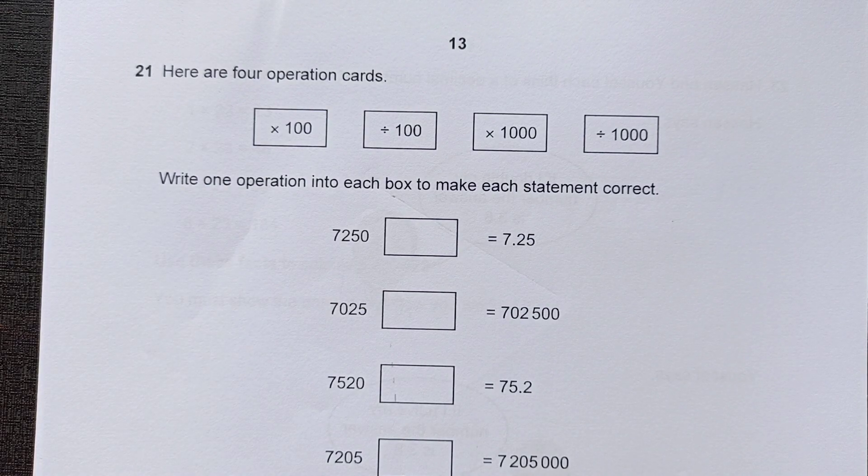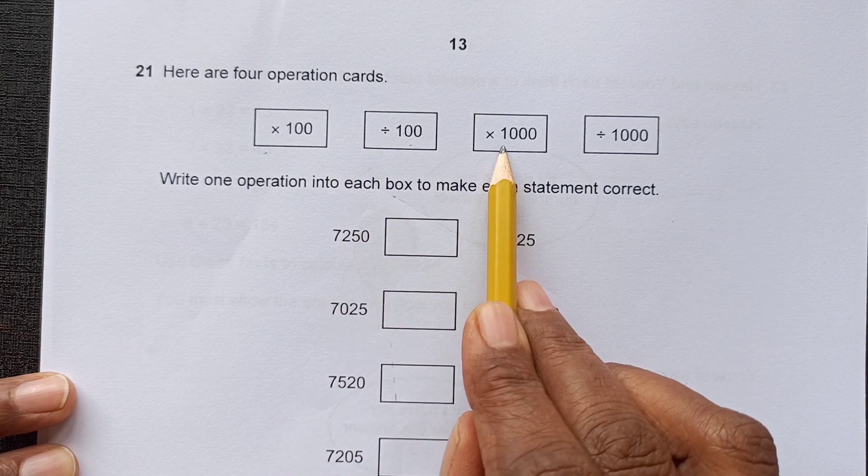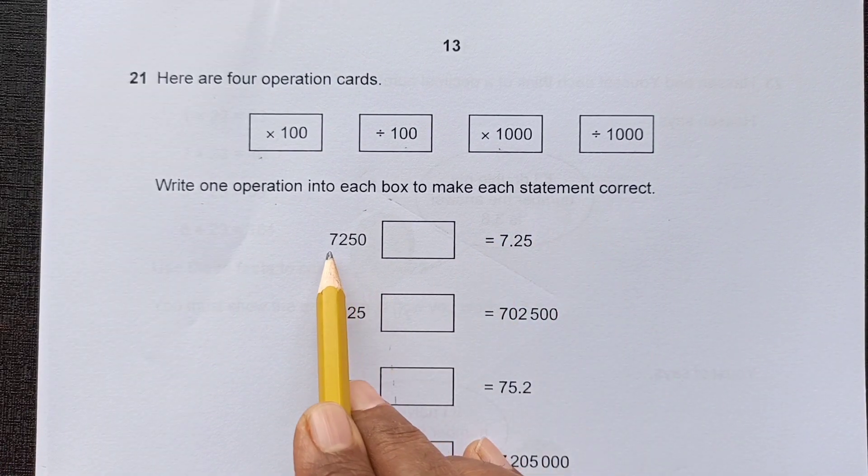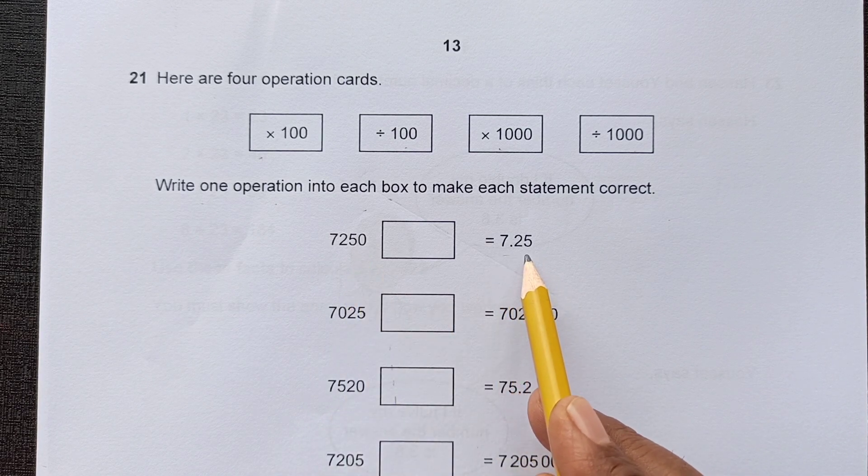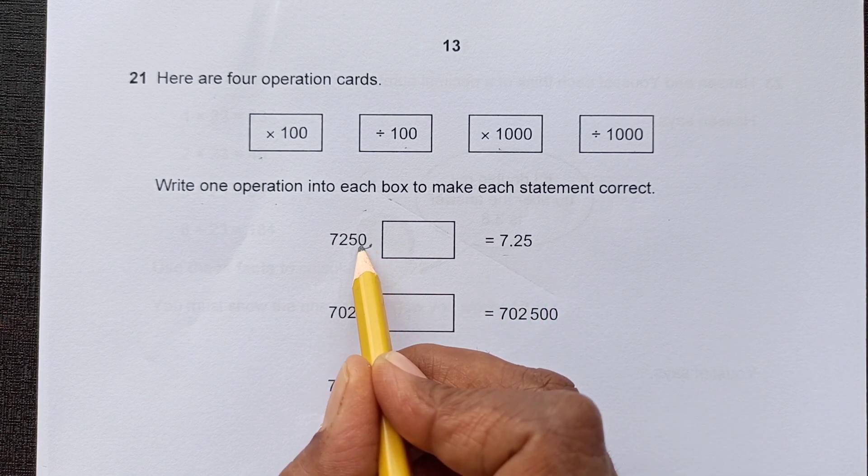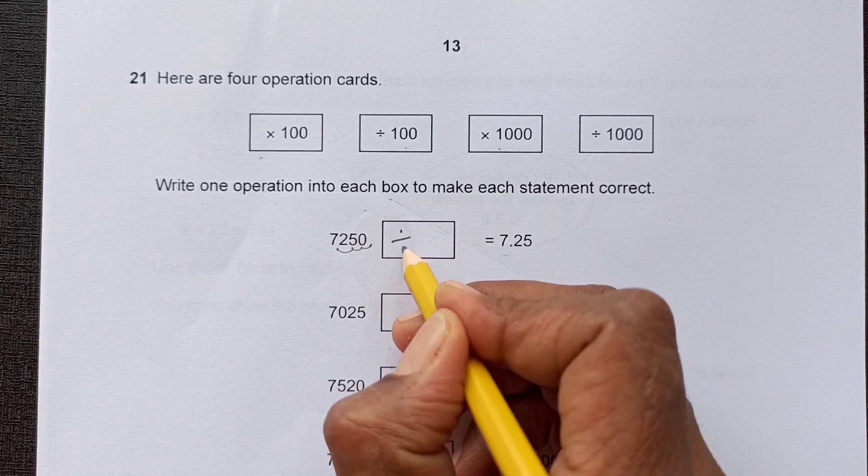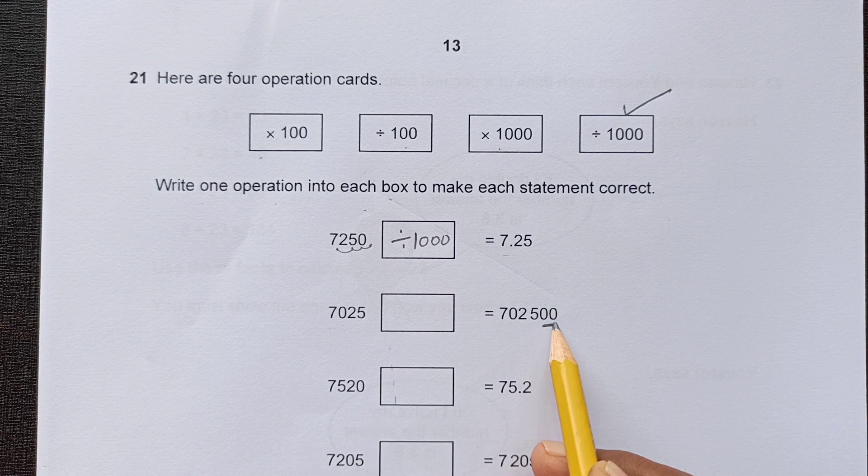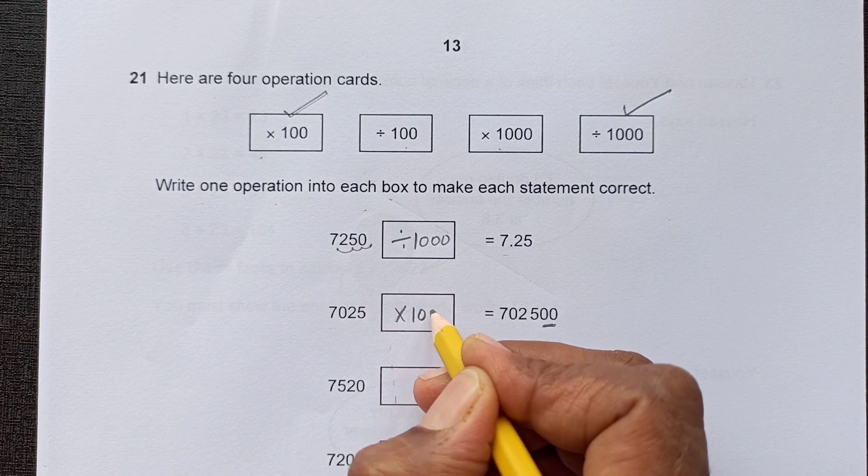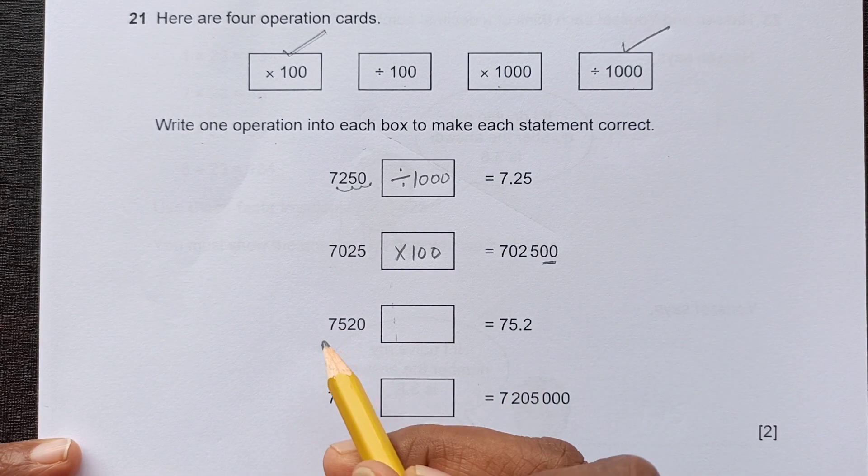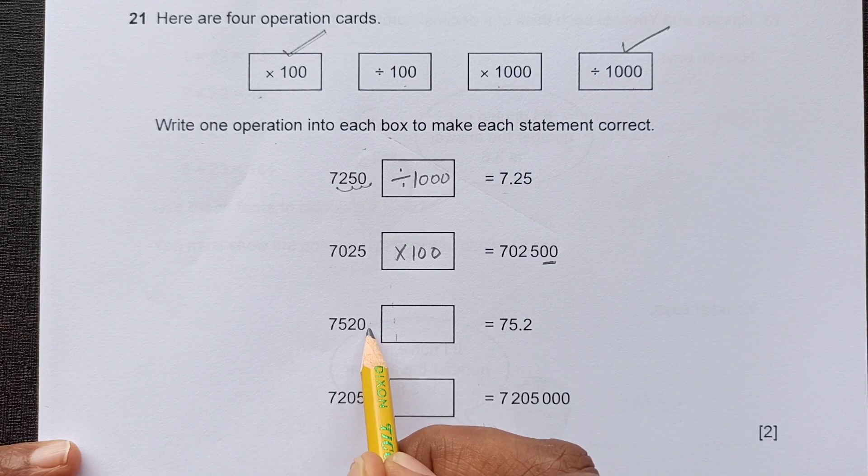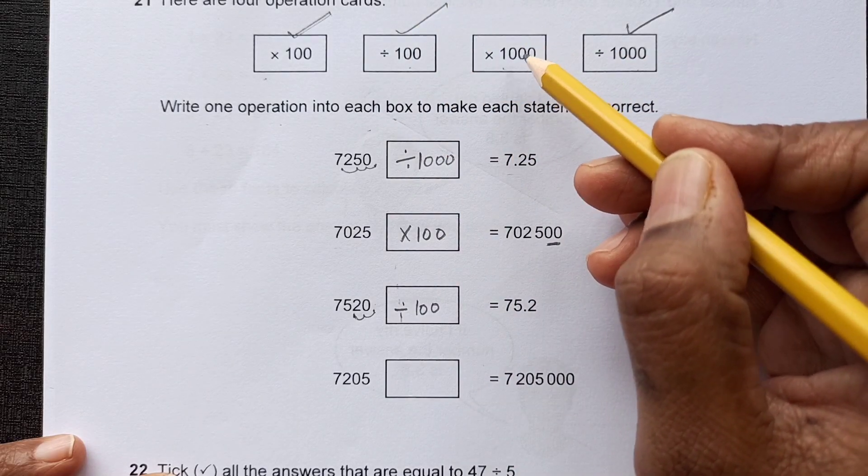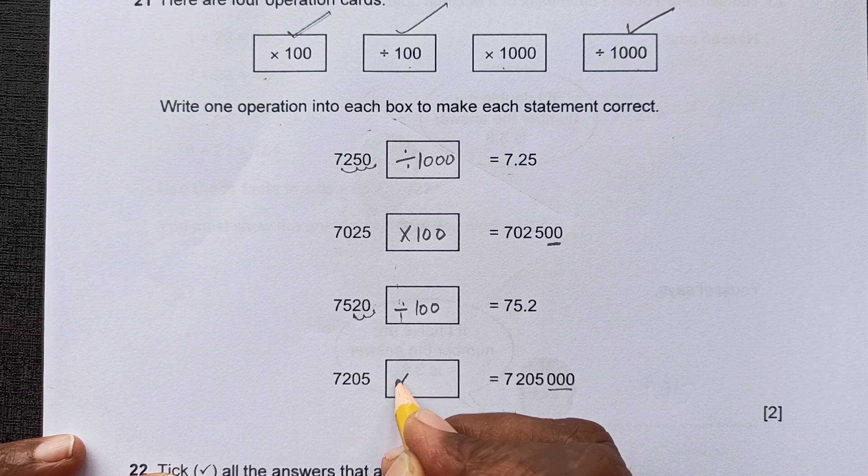Question 21. Here are 4 operation cards: multiply by 100, divide by 100, times 1000, divide by 1000. Write 1 operation into each box to make this statement correct. So we have here 7250. You see this is decreased to 7.25. So that means we are dividing, and the decimal moved 1, 2, 3 places. So it will be divided by 1000. So we have used this one. Now here, this one is increasing. You see they have added 2 zeros, so times 100. Now this one is decreased again. So that means we are dividing. The decimal moved 1, 2 places. So it is divided by 100. And now we are left with only this one. So this is increased by 3 zeros, so times 1000.